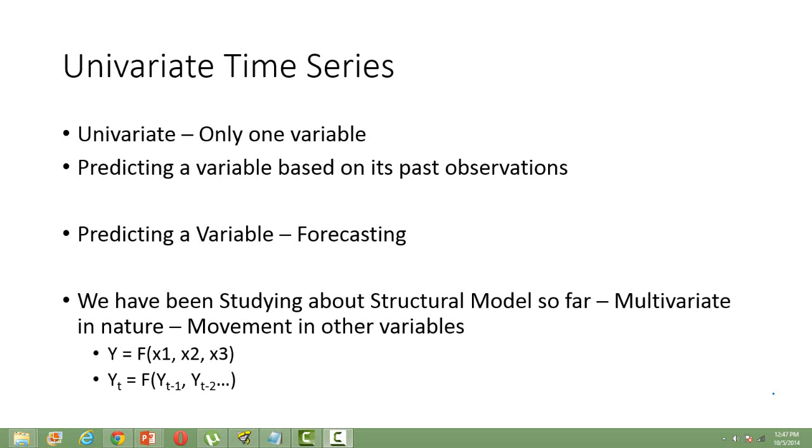In this video I will be talking about the univariate time series models. The word univariate means that there is only one variable in the model. So far we have been studying about multivariate models. Multivariate means more than one variable in the model.